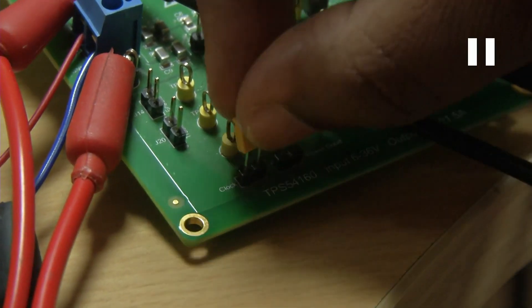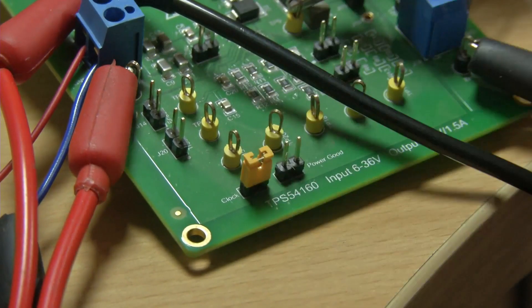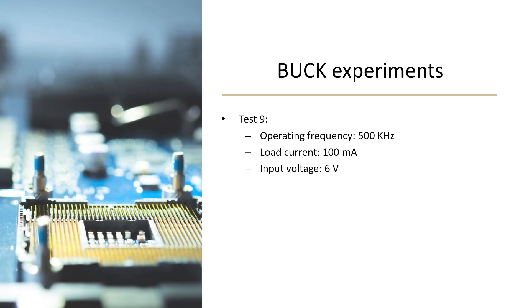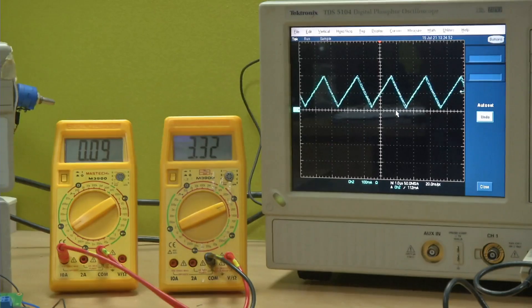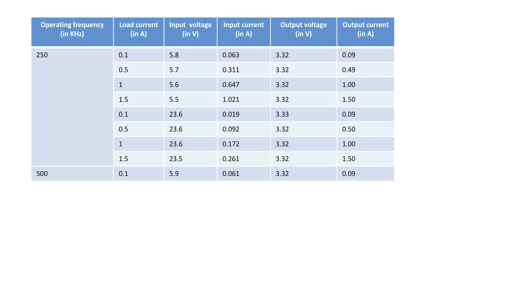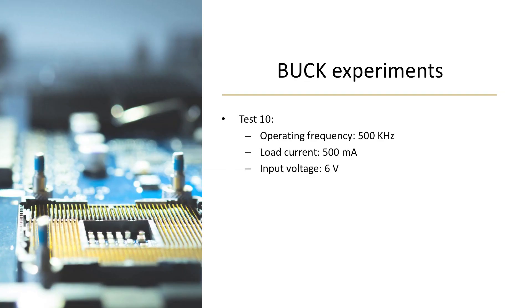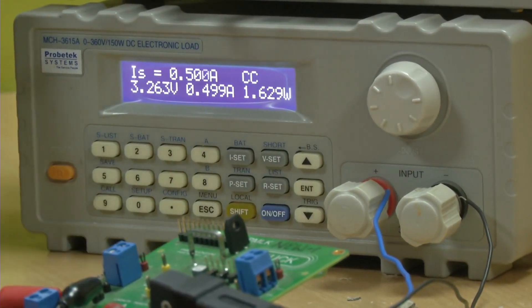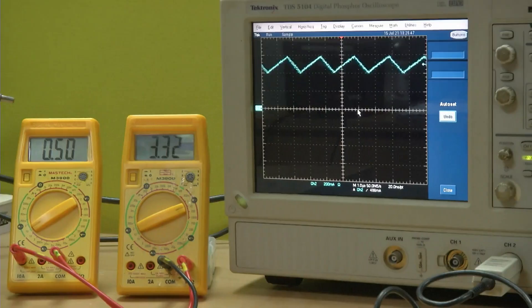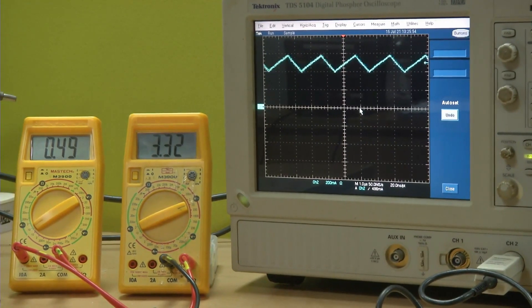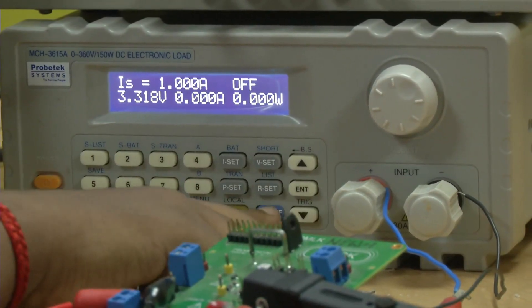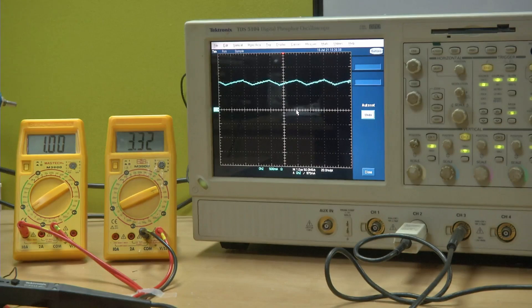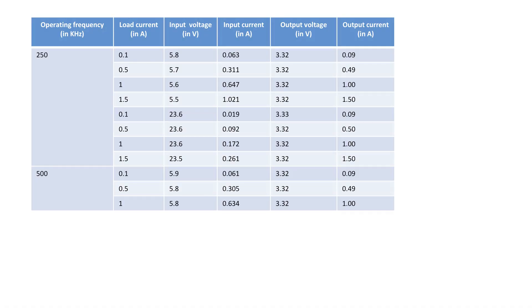Now let me repeat all of this at 500 kilohertz. The way to do it is to put a jumper — it becomes 500 kilohertz. I urge you to look at the switching current now. Set the input back to 6 volts, load current is 100 milliamperes. You see the input, that is the output, and that is the switching current. Again set it to 500 milliamperes, then to 1 ampere — observe the input voltage, current, output voltage, current, and the switching current each time.